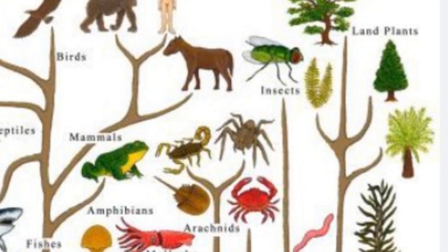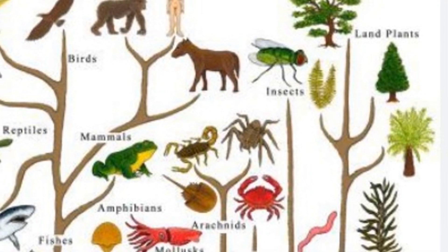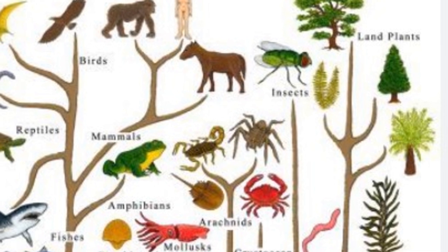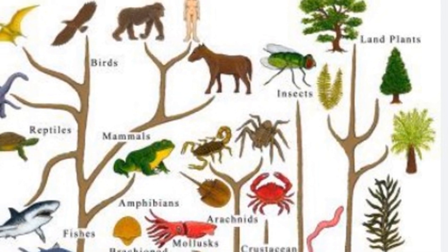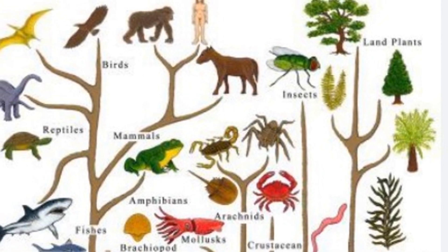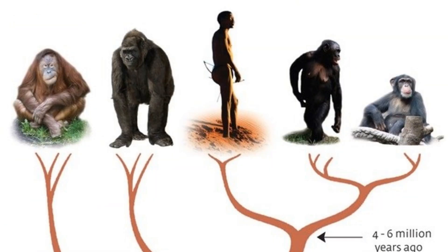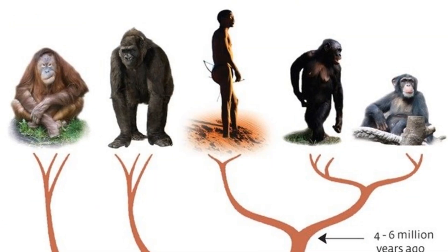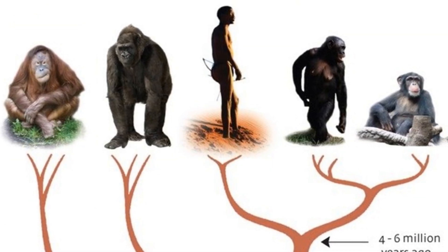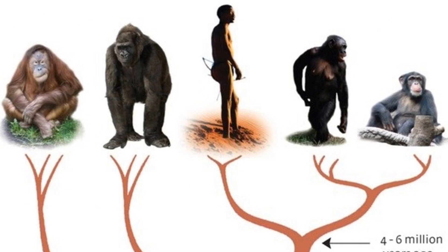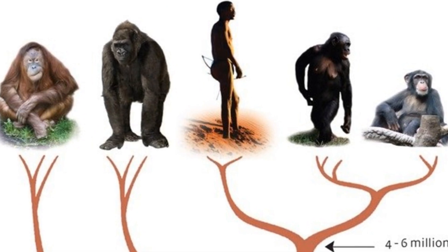Imagine a massive, intricate family tree that spans millions of years. Instead of individual family members, picture every species on Earth. That's the tree of life. At the roots of this tree, we find our most ancient common ancestors. And as we climb toward the branches, we encounter the myriad of species that have ever existed.